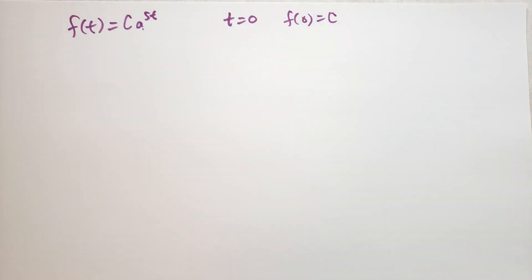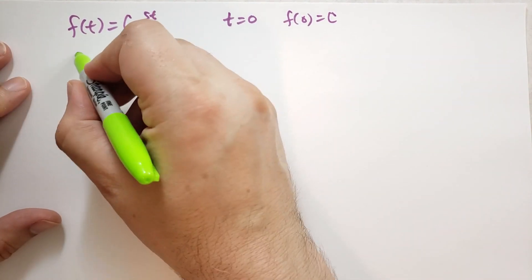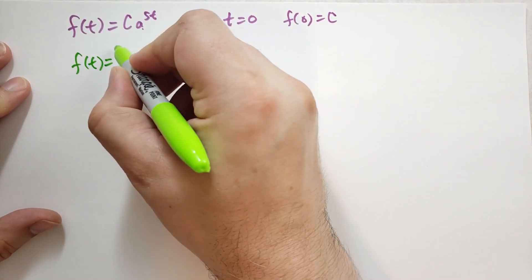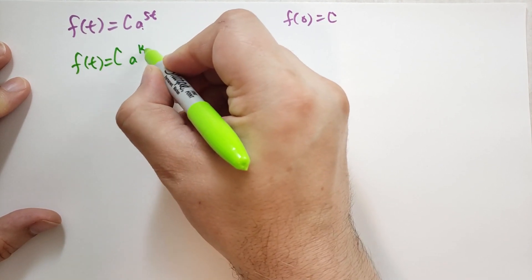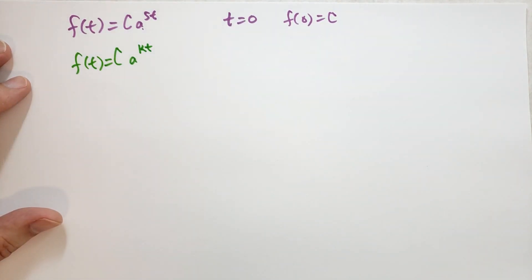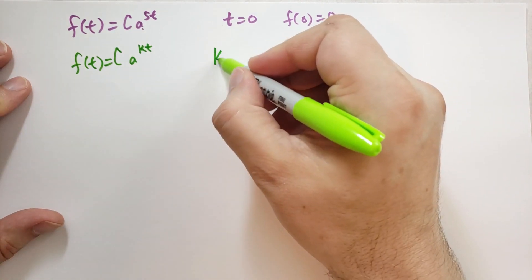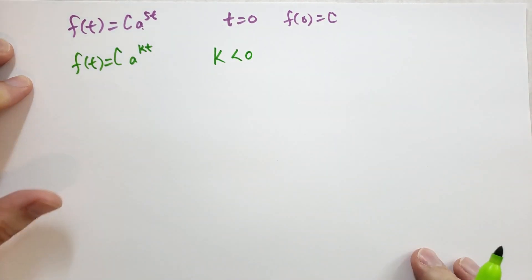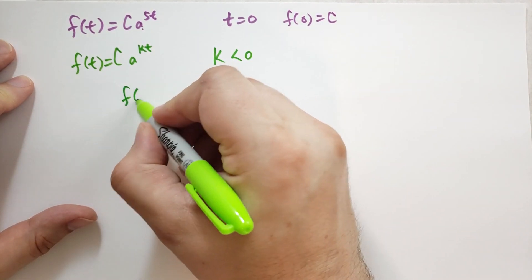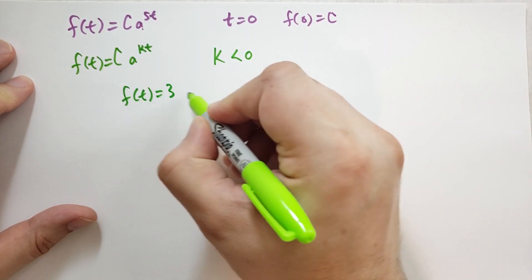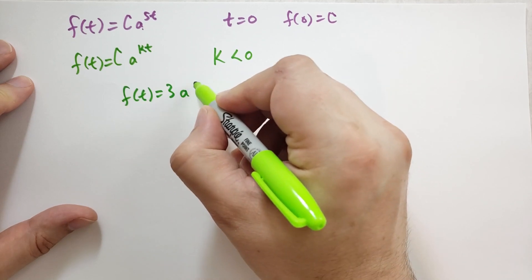Another example. Certain substances disintegrate at a rate proportional to the amount of substance present. If f denotes this amount, then it is known that f as a function of time is given by the formula f(t) equals C times a^(kt). In this case, k is negative, so k is less than 0 because we're reducing the amount. An example of this would be f(t) equals 3 times a^(-2t). And if a equals 2, so we had 3 times 2^(-2t).